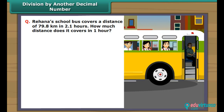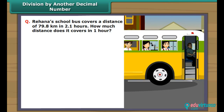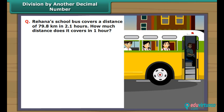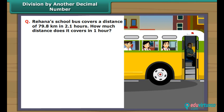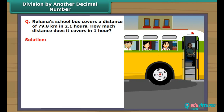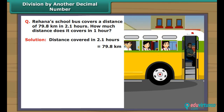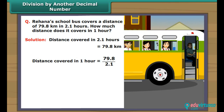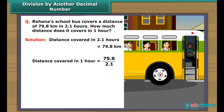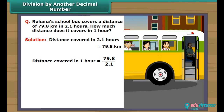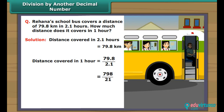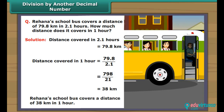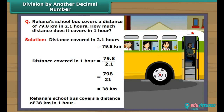Let us practice a question based on this. Rehana's school bus covers a distance of 79.8 km in 2.1 hours. How much distance does it cover in 1 hour? The distance covered by the bus in 2.1 hours is 79.8 km. So, the distance covered in 1 hour will be equal to 79.8 divided by 2.1. It can be written as 798 divided by 21, which gives 38 km. Hence, Rehana's school bus covers a distance of 38 km in 1 hour.